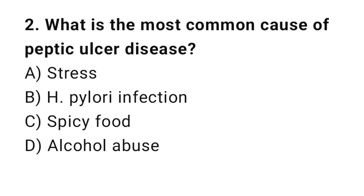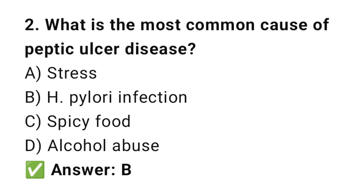Q2: What is the most common cause of peptic ulcer disease? The right answer is B, H. pylori infection. Helicobacter pylori bacteria weakens the stomach lining, causing ulcers.